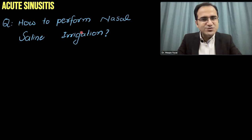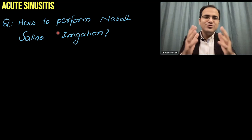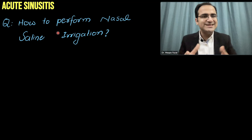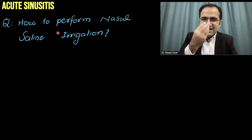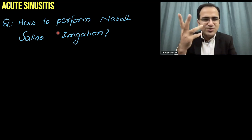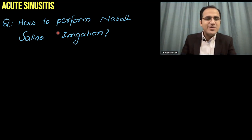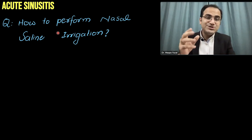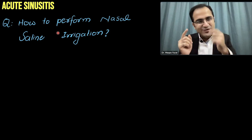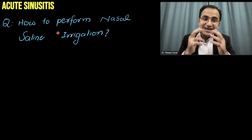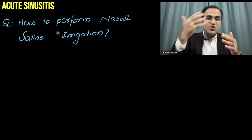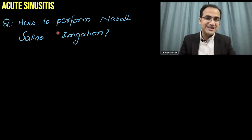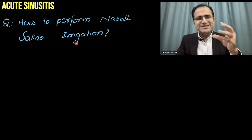Nasal saline irrigation involves flushing the nasal cavity with saline to clean it. This is important because if the nasal cavity is filled with mucus, intranasal glucocorticoids won't be absorbed and won't work. By irrigating with saline first and clearing the mucus, you ensure that subsequently applied nasal sprays — glucocorticoids and decongestants — can be properly absorbed.